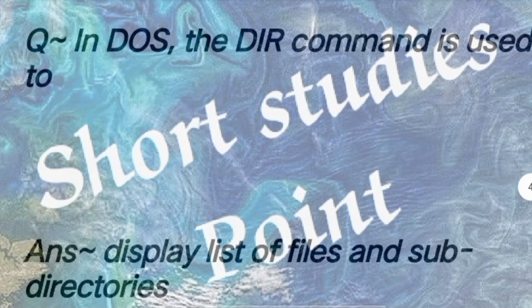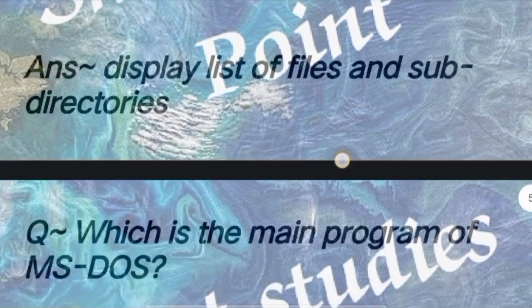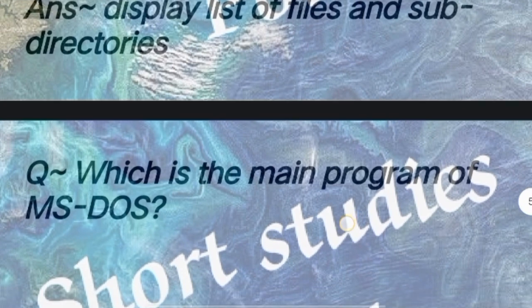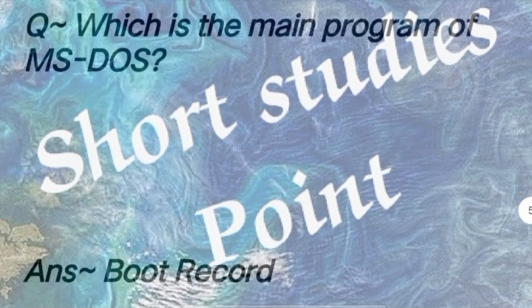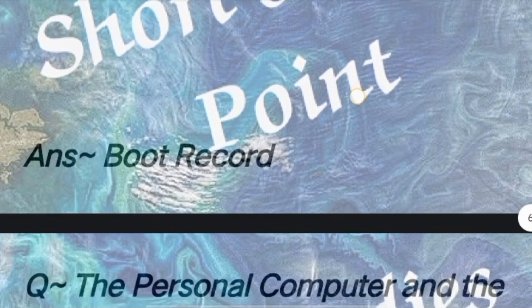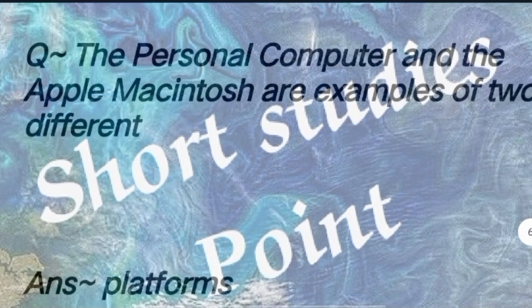In DOS, the dir command is used to answer: display list of files and subdirectories. Next question: Which is the main program of MS-DOS? Answer: boot record. The personal computer and the Apple Macintosh are examples of two different platforms.